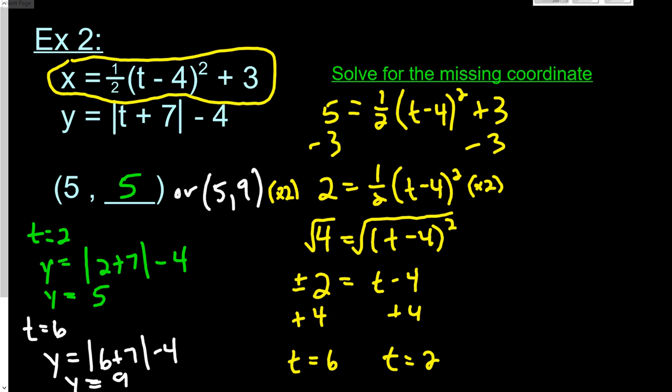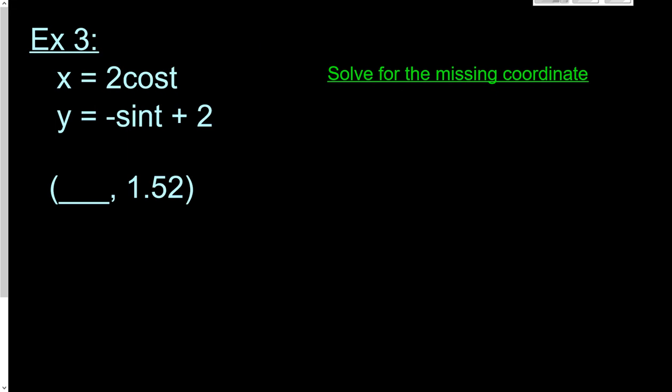All right, let's look at the third example. And this third example has some trig involved. We've got x equals 2 cosine t and y equals negative sine t plus 2. It tells us the y part of the coordinate. So that means I'm going to start with the y part of the parametric equation and solve for t.